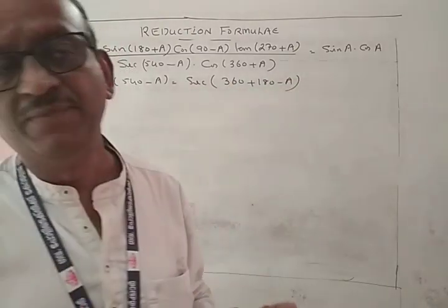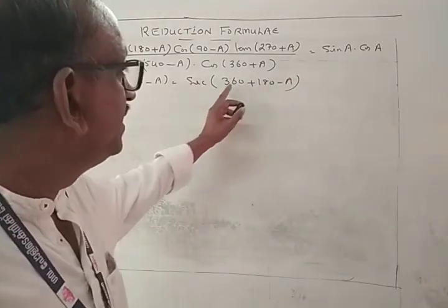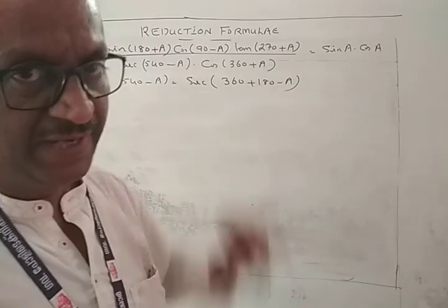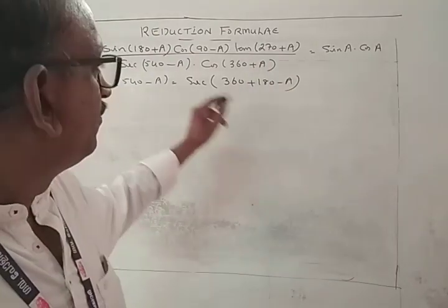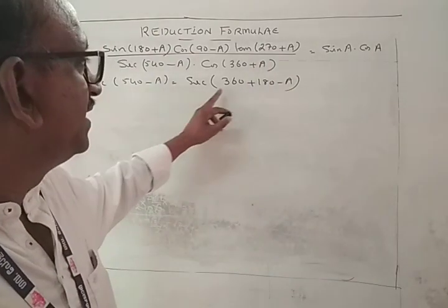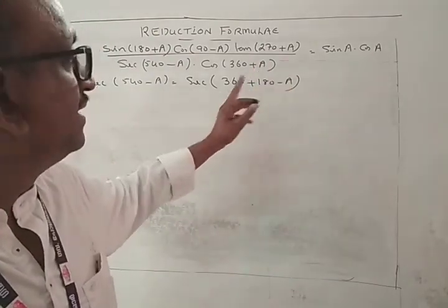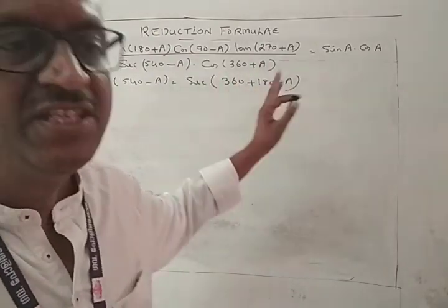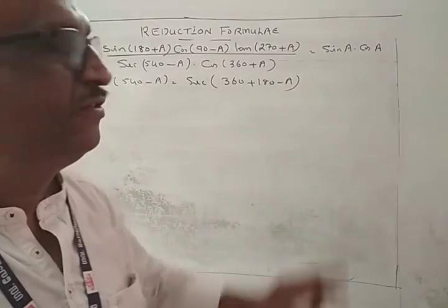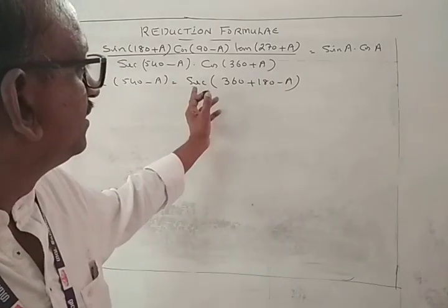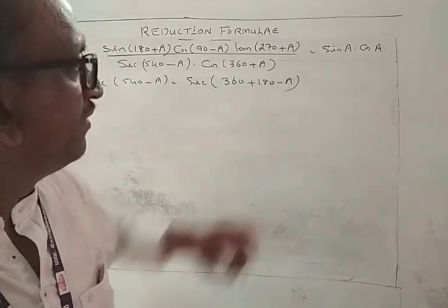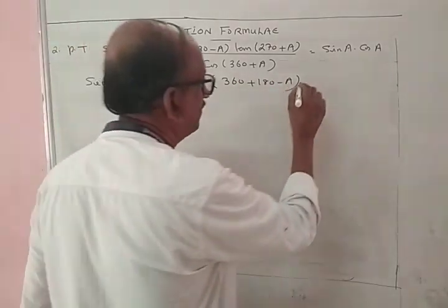540 is the same as 360 + 180. Therefore, 540 - A is 360 + (180 - A). Since 360 equals 0, the answer is sec(180 - A). In the second quadrant, sec is negative, so sec(180 - A) = minus sec A.